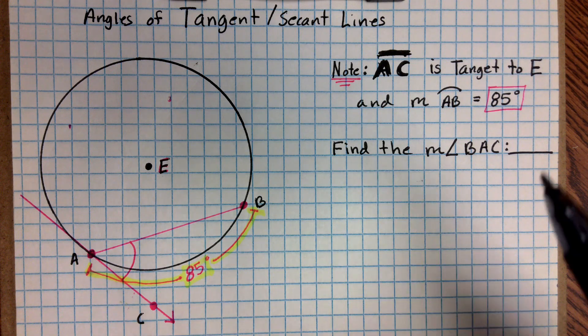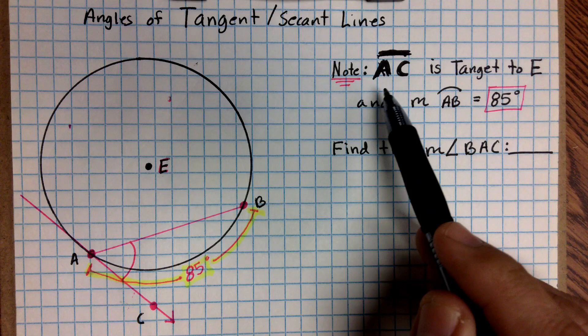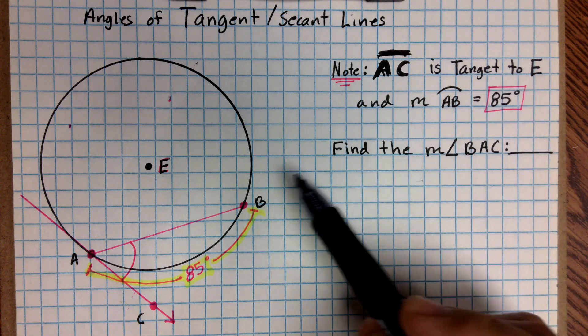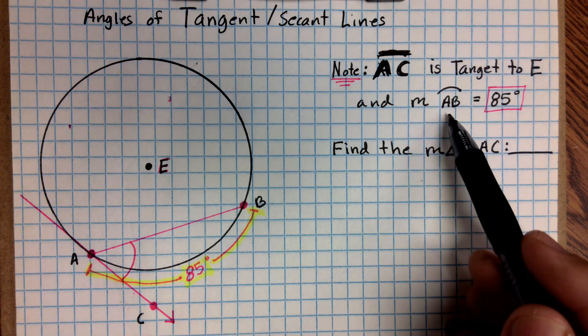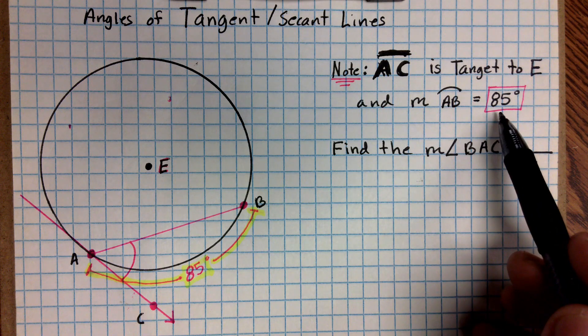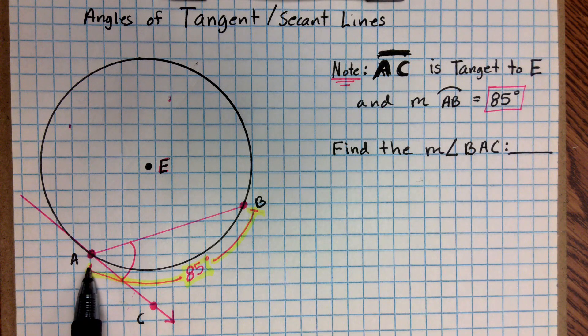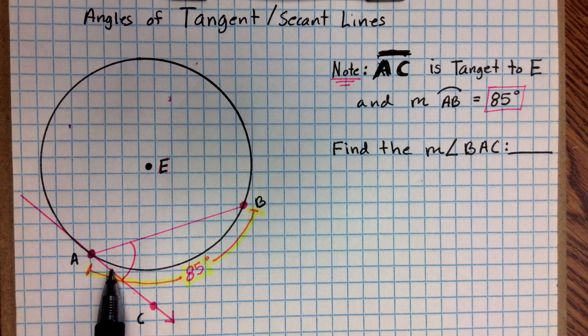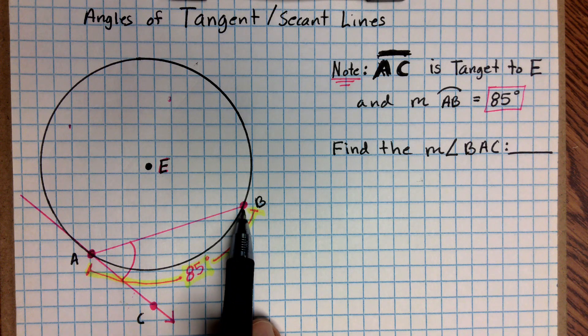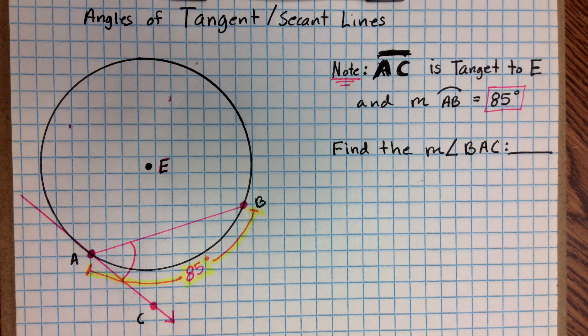In other words, line AC. The problem tells us that AC is tangent to E, and that the measure of arc AB is 85 degrees. So from this portion of the circle going all the way around to B, that arc AB, this minor arc, is 85 degrees.